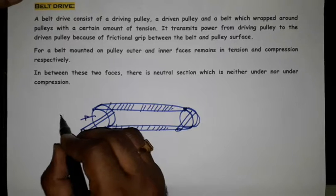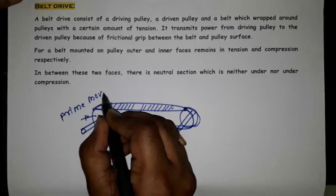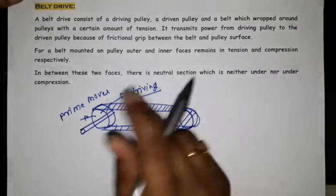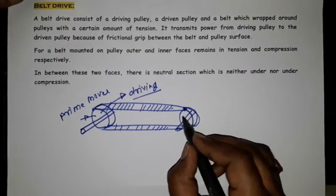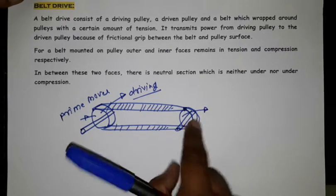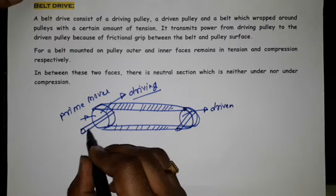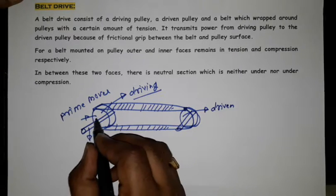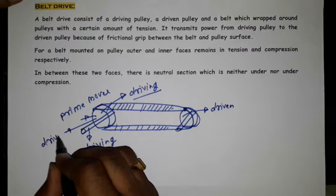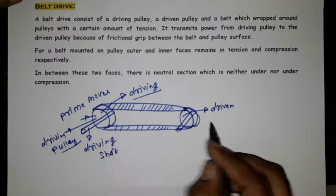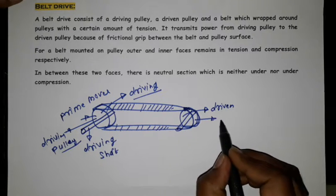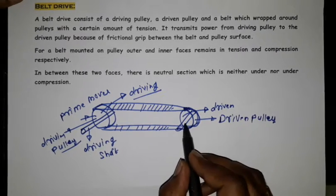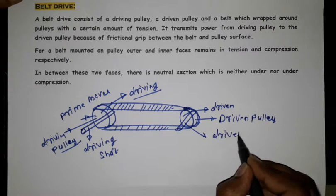For example, this is my prime mover, that is the power. It is driven. This is the driving shaft and this is the driving pulley and this is the driven pulley and this is the driven shaft.